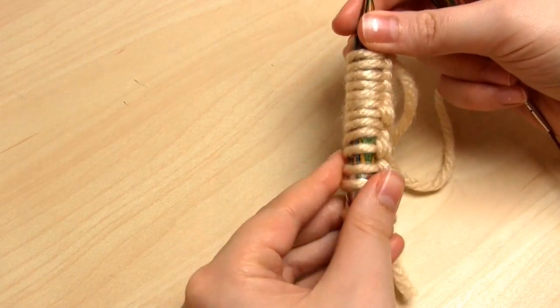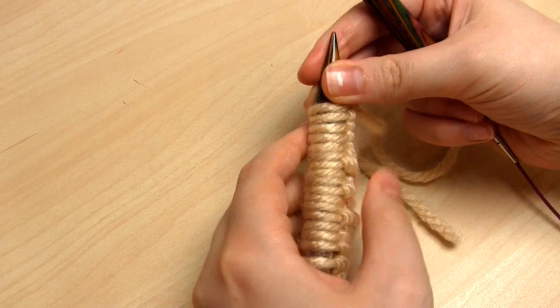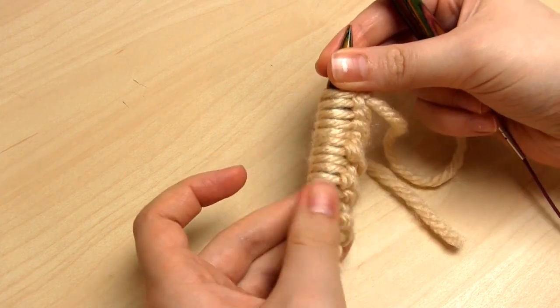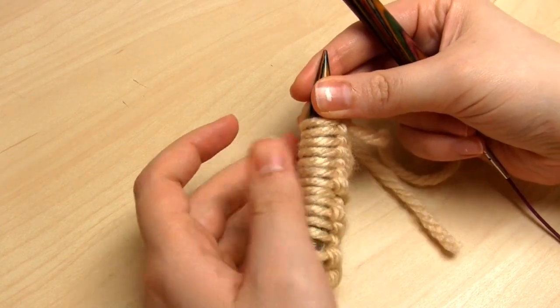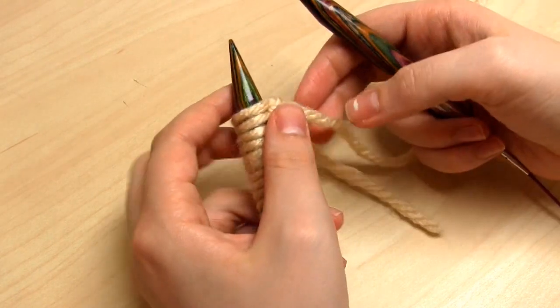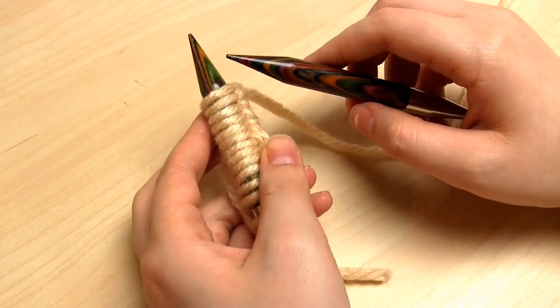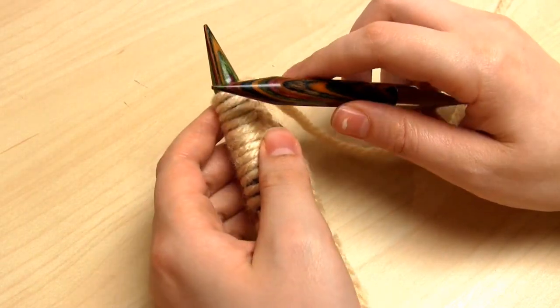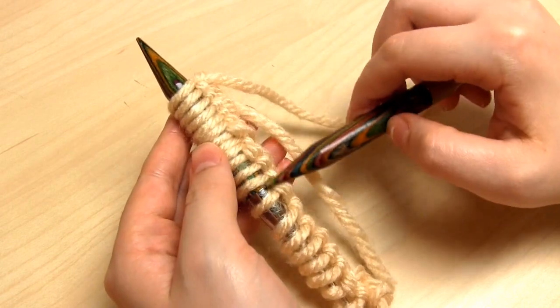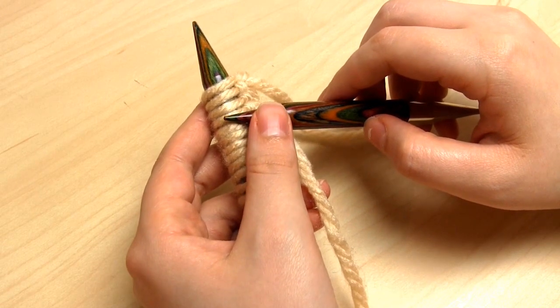So the first thing you need to do is cast on the stitches. If you don't know how to cast on stitches, then I would recommend going to my long tail casting on video as that is the method I use. You need to cast on a multiple of 8 stitches and then add 5 to that number. So in my case, I am doing 2 times 8 which is 16 stitches, and then adding 5 to make 21 stitches.